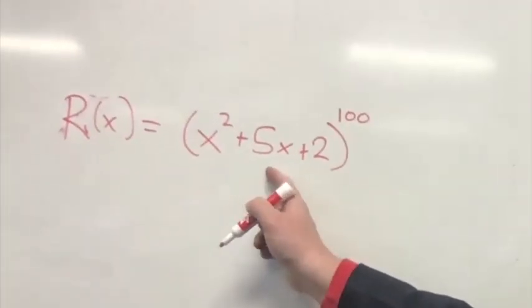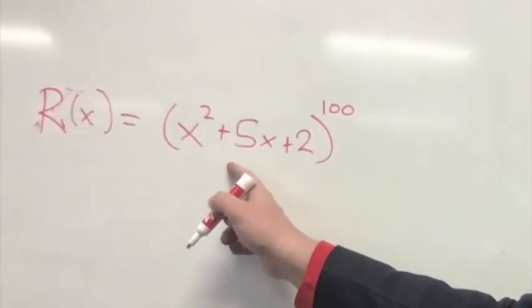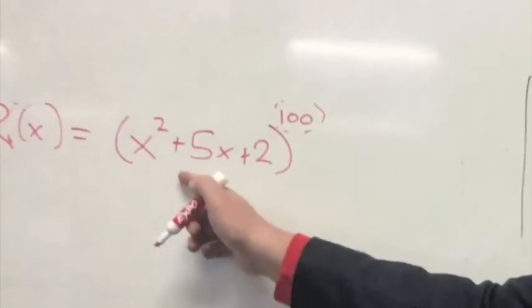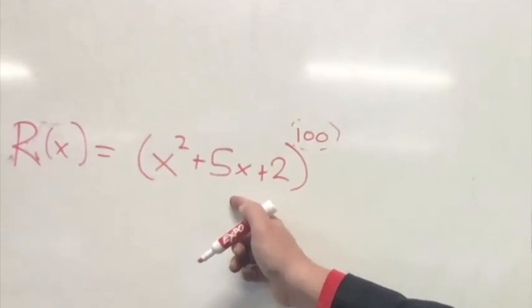They're probably going to break this down and say, okay, the first thing that's important to recognize is the outside function is the thing being raised to the 100th, and the inside is this x squared plus 5x plus 2 business.